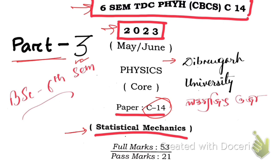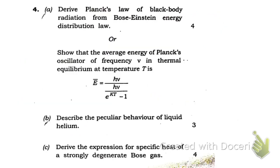If you want to follow me on Instagram, my ID is ojhalakhyajit123. You can follow me on Instagram. Now let's start — we have already solved up to question number five, so today we're going to start from question number four A.